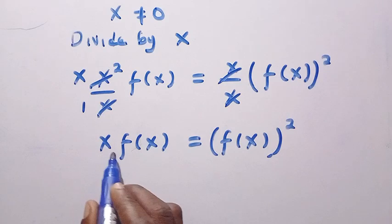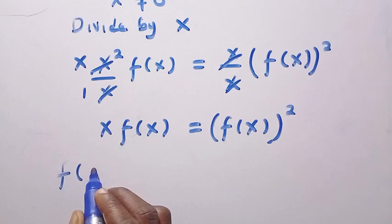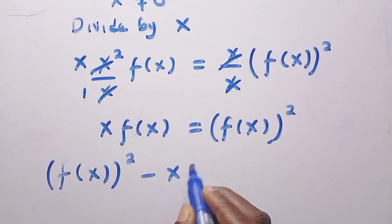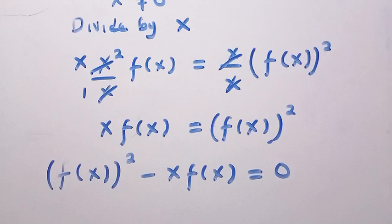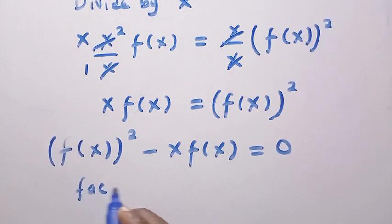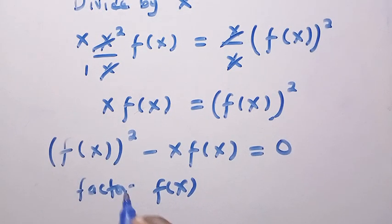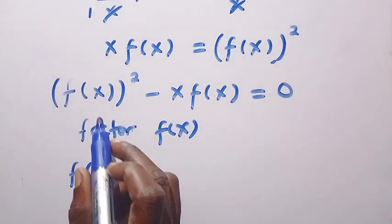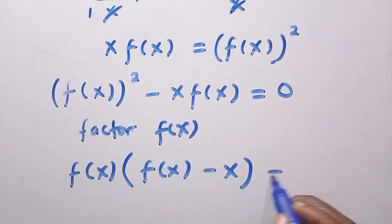If we subtract x times f of x from both sides, we are going to have f of x all raised to the power of 2 minus x times f of x equals 0. At this point, let's factor out f of x, and we get f of x open bracket f of x minus x equals 0.